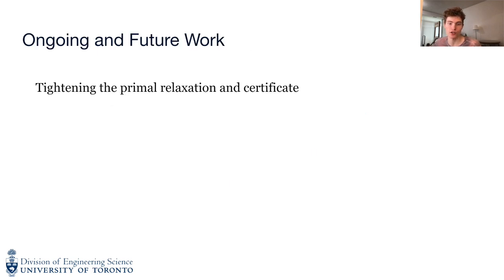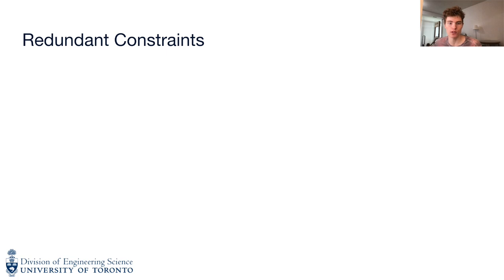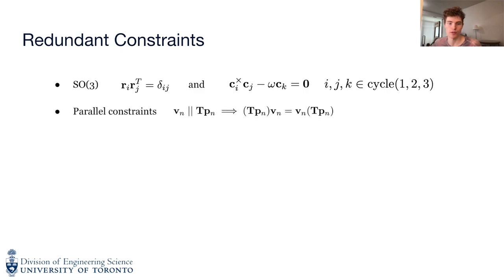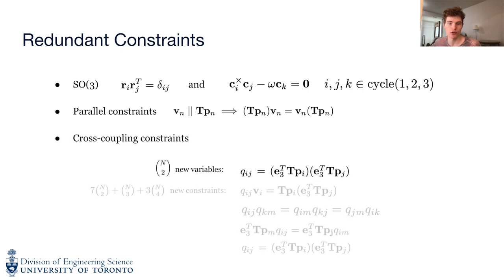Tightening the primal relaxation in its certificate is part of ongoing and future work. The two main approaches are: add redundant constraints to the QCQP, prior work has shown that this can help tighten the dual problem, or reformulate the QCQP substitution, which leads to a different SDP relaxation. We explored three forms of redundant constraints for the 3D problem: redundant constraints to enforce the rotation matrix is in SO3, constraints that enforce our substitution variables are parallel to the points in the camera frame, and we tried adding variables and new constraints associated with them. Unfortunately, none of these methods tightened the SDP relaxation meaningfully.